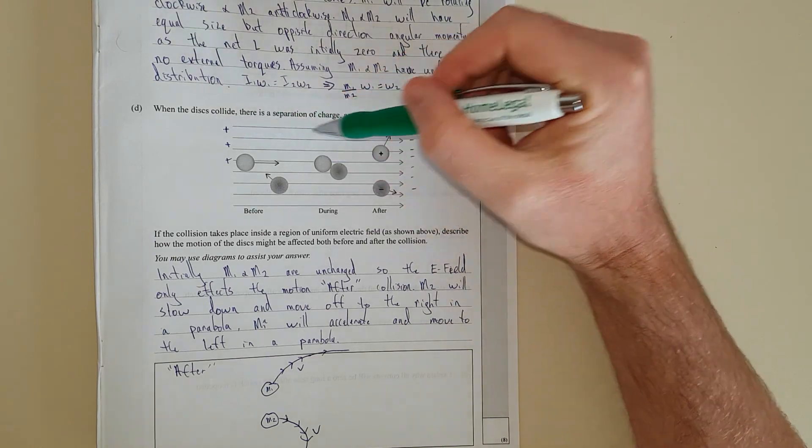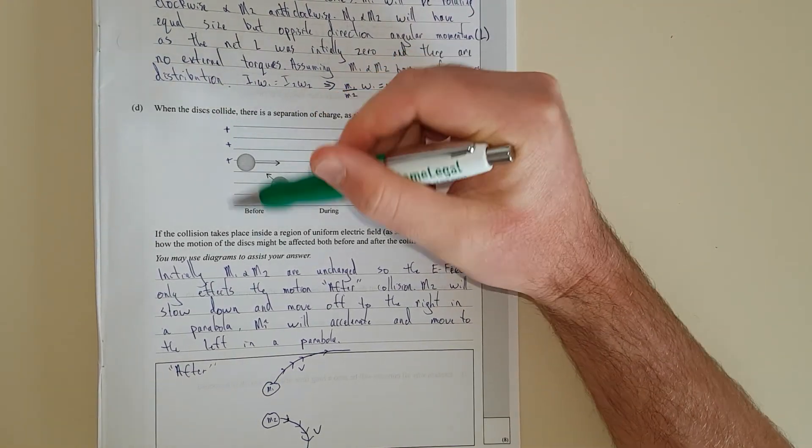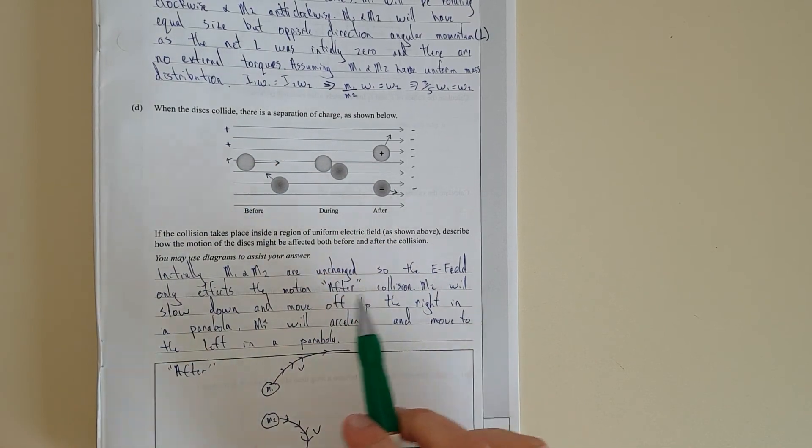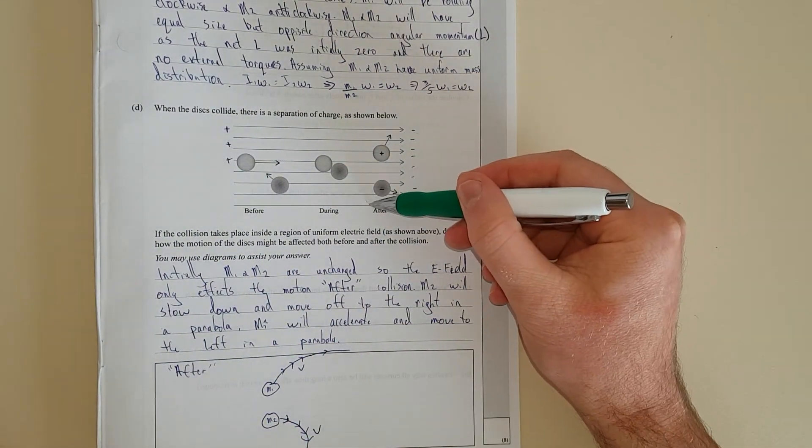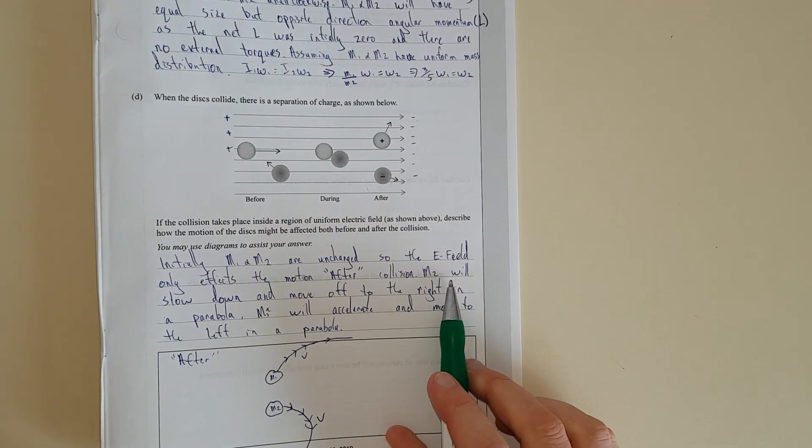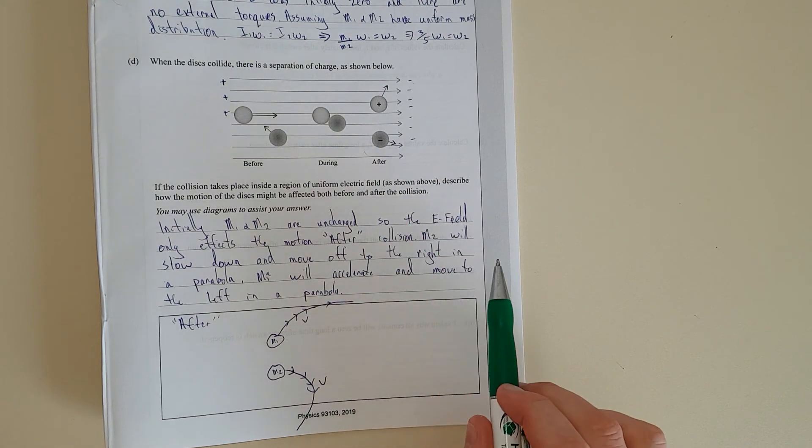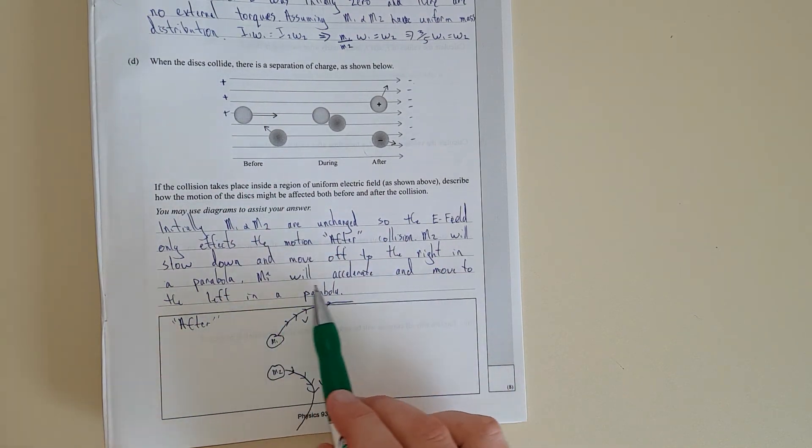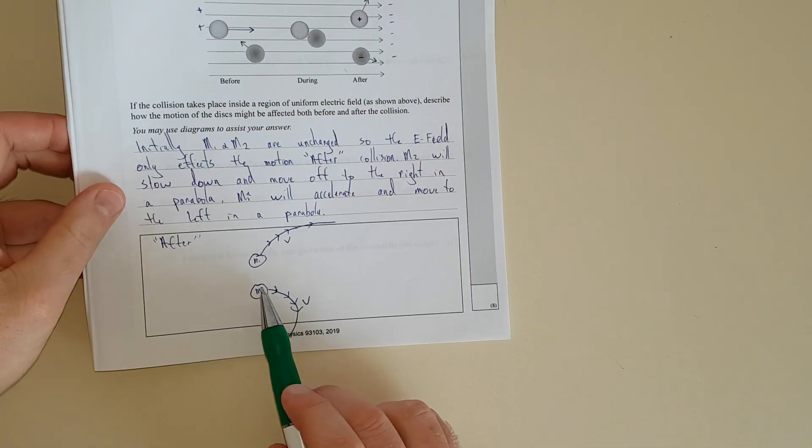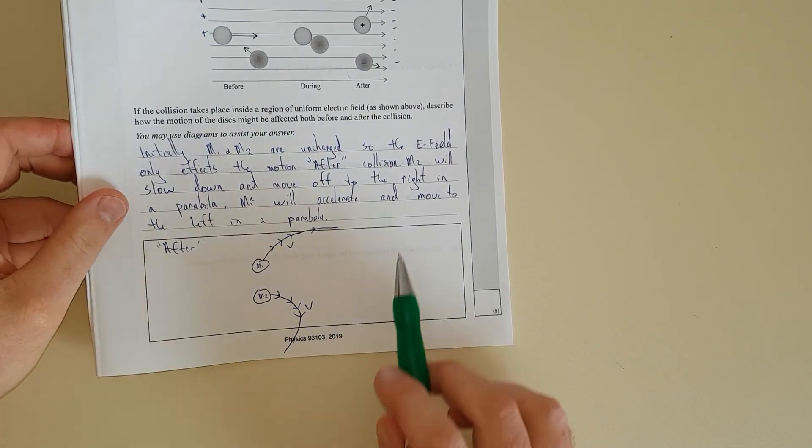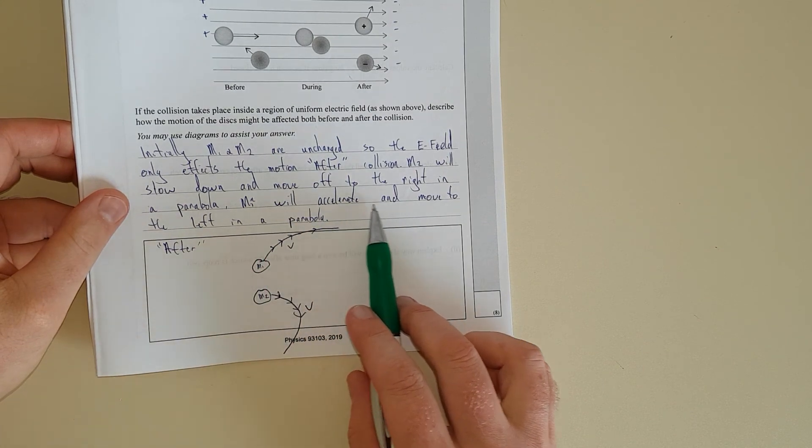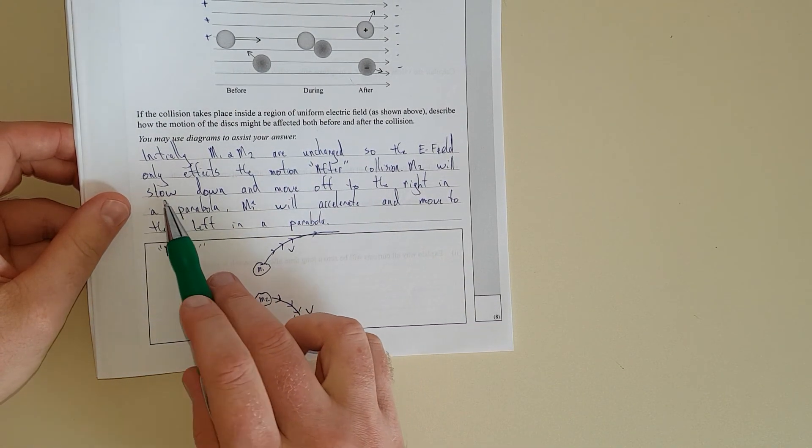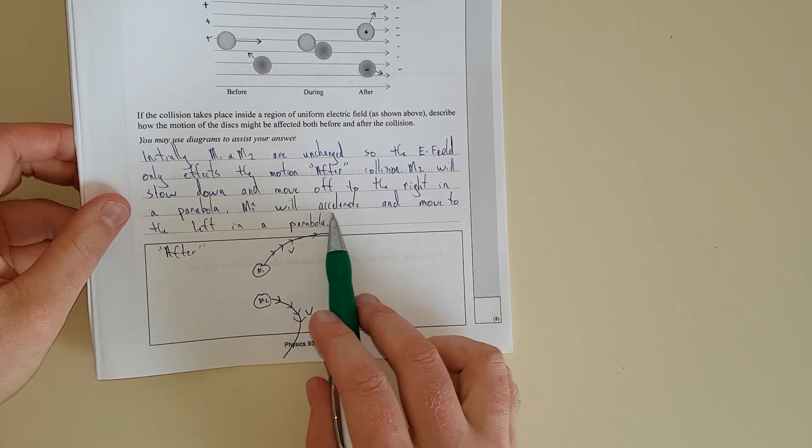I said initially M1 and M2 are uncharged, so the E field only affects the motion after collision. After the collision, M2 will slow down and move off to the right, so it's going to slow down because it's going to be attracted to the positive end in a parabola. I've sketched that shape in because if they give you a box to sketch it you better sketch it.